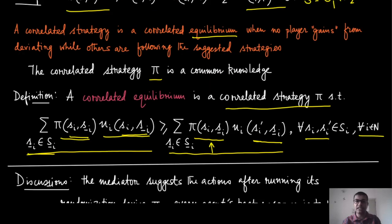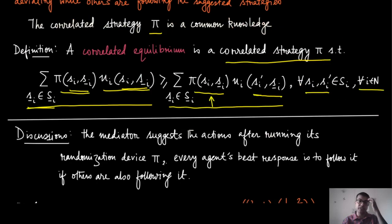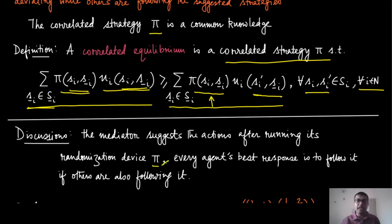Whenever the mediator suggests actions after running its randomizing device pi, every agent's best response is to follow it if the other players are also following it. This is how the definition of correlated equilibrium can be stated in words. Let us look at an example to appreciate this point.